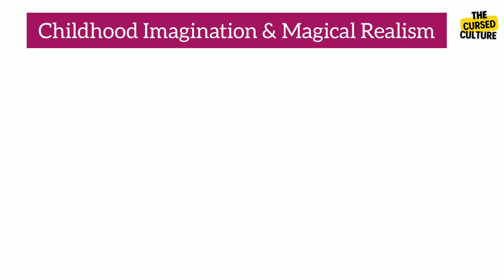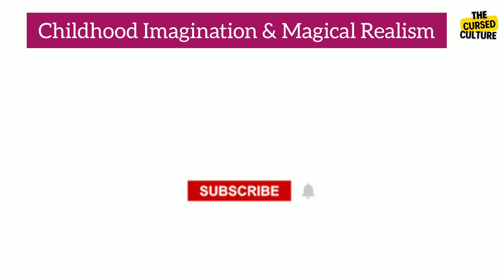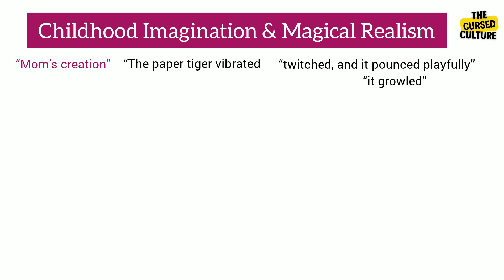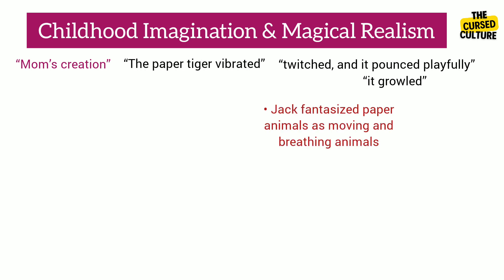The author seamlessly incorporates magical realism within the story through the paper animal toys of the young Jack, suggesting the power of childhood imagination. Jack's mom's creation twitched and it pounced playfully, it growled and the paper tiger vibrated. Jack fantasized the paper animals as moving and breathing animals.